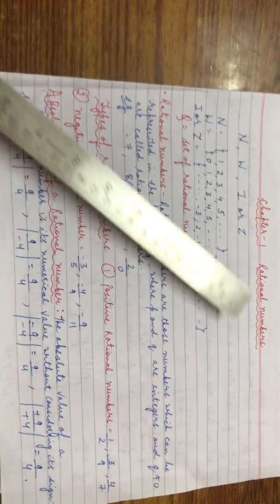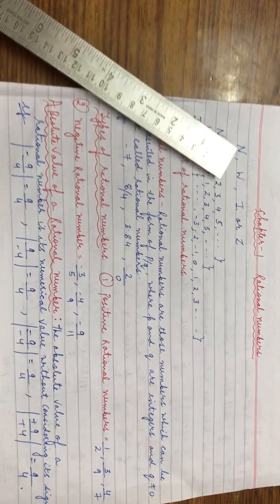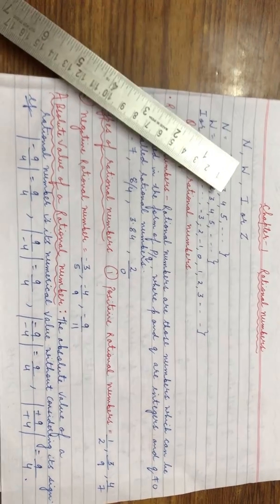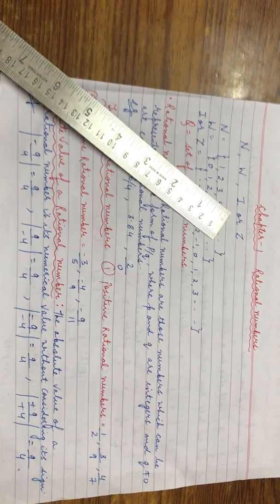Chapter 1: Rational Numbers. In the previous class, you might have learned about natural numbers, whole numbers, and integers.